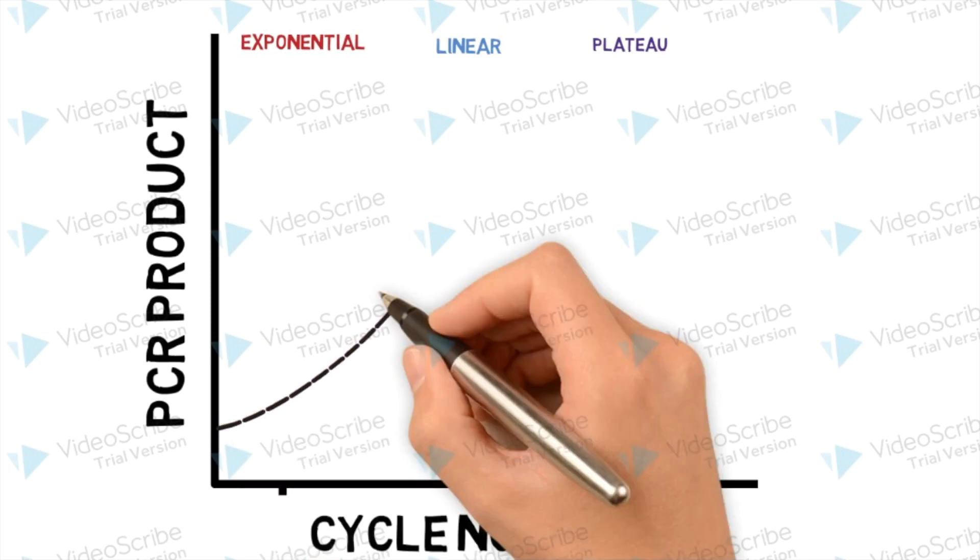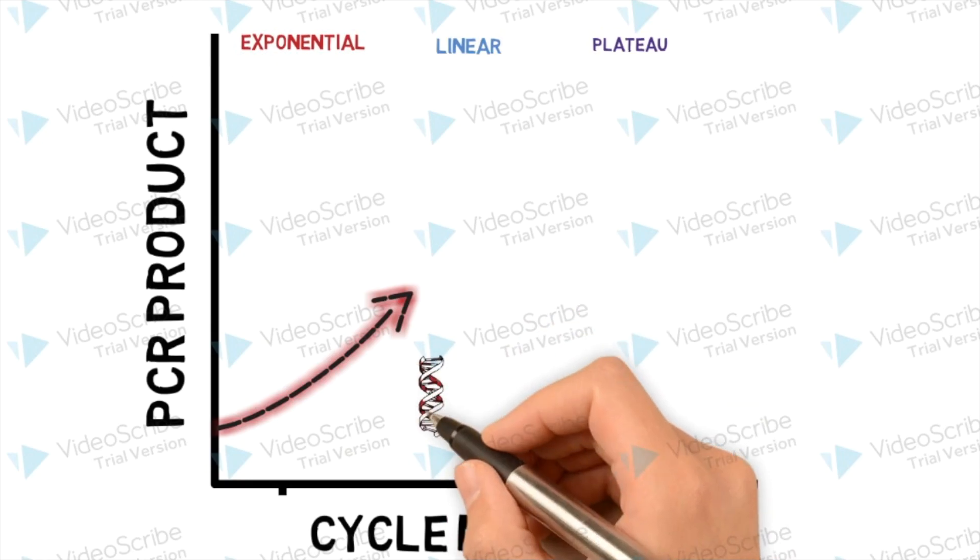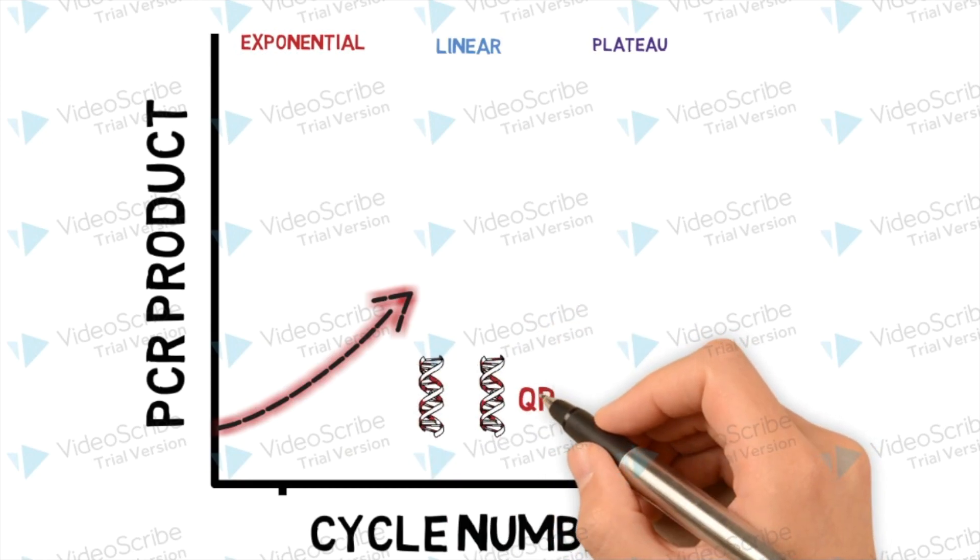In the exponential phase, the product or amplicon doubles with each cycle. Real-time or quantitative PCR takes measurements during this phase.